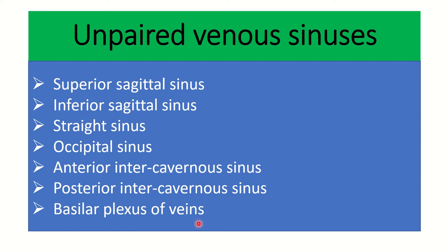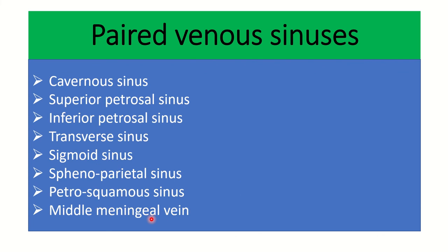Again, to recap, the unpaired sinuses are: superior sagittal sinus, inferior sagittal sinus, straight sinus, anterior intercavernous sinus, posterior intercavernous sinus, and basilar plexus. Some paired venous sinuses are also present — they are cavernous sinus, superior petrosal sinus, inferior petrosal sinus, transverse sinus.